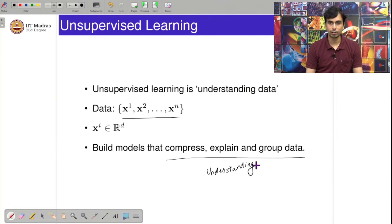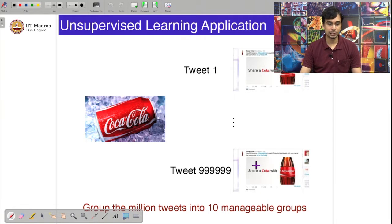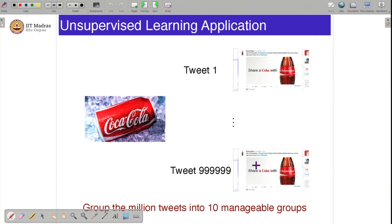We will explain what all of these mean with 2 specific examples: dimensionality reduction and density estimation. Here is an example of how unsupervised learning can be useful. Unsupervised learning, as I mentioned, is typically not used as an end in itself because the outputs of unsupervised algorithms by themselves are not useful.